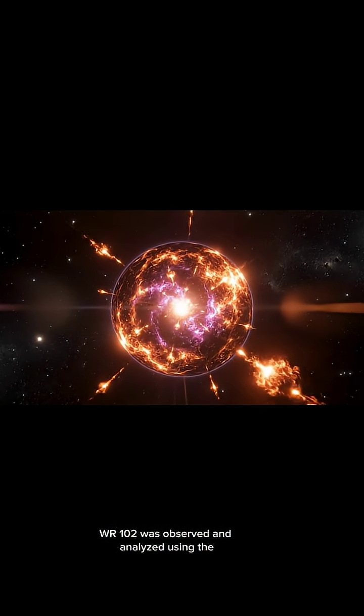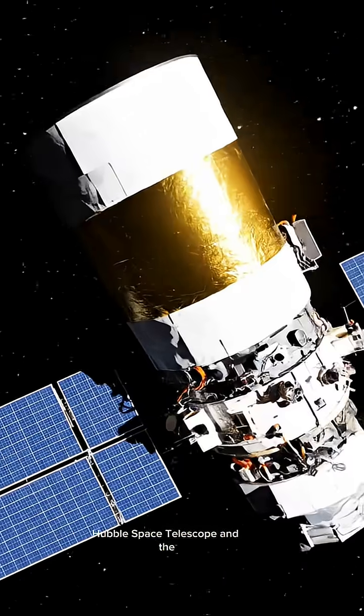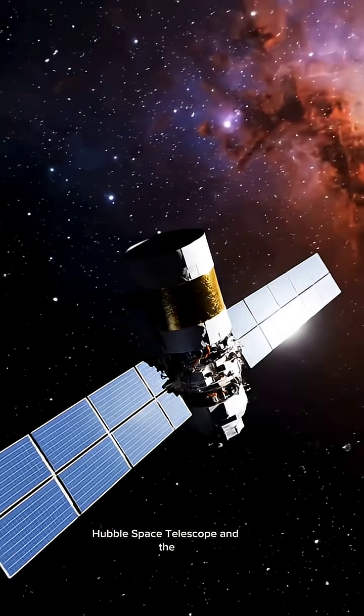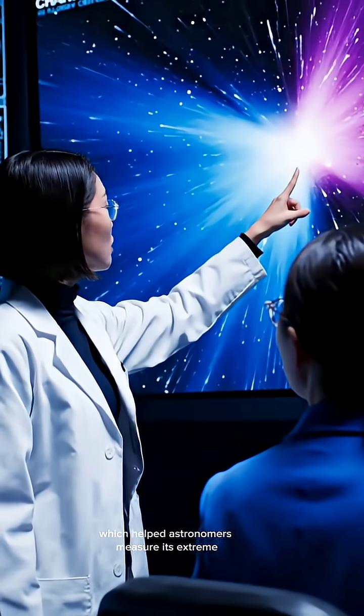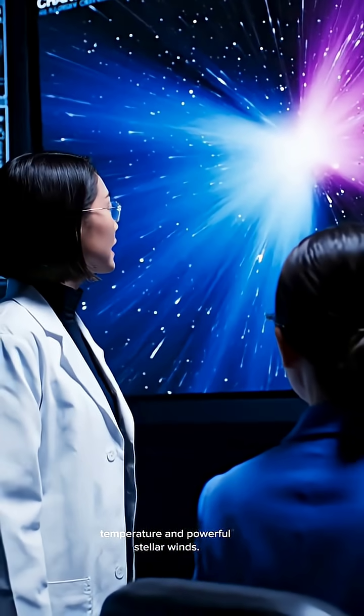WR102 was observed and analyzed using the Hubble Space Telescope and the Chandra X-ray Observatory, which helped astronomers measure its extreme temperature and powerful stellar winds.